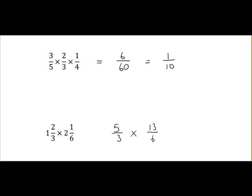So we have 5 over 3 multiplied by 13 over 6. So it's the numerator by the numerator. 5 by 13. That will give us 65. And we have the denominator by the denominator. 3 by 6 which is 18.